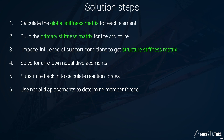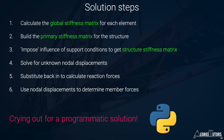To summarize: we calculate the global stiffness matrix for each element, build the primary stiffness matrix, impose boundary conditions to get the structure stiffness matrix, solve for nodal displacements by inverting that matrix, calculate reaction forces, and then determine member forces. It's a very step-by-step, formulaic process that is ideal for a programmatic solution — which is what we're aiming for in this course. Next, we'll work through a numerical example to bring these steps to life.